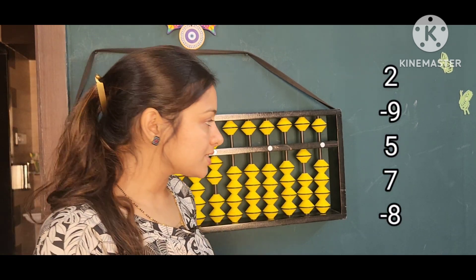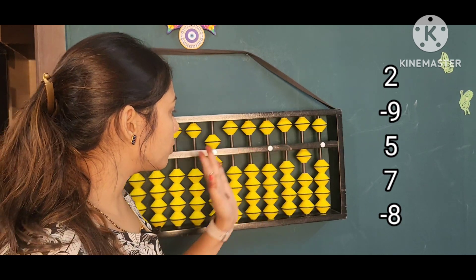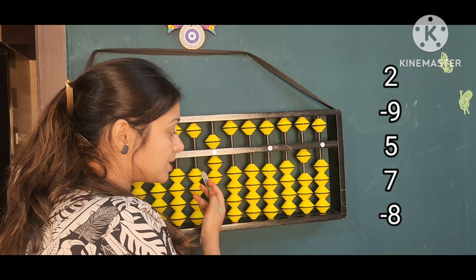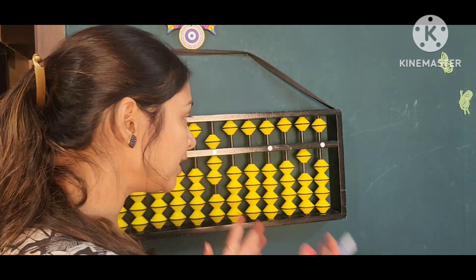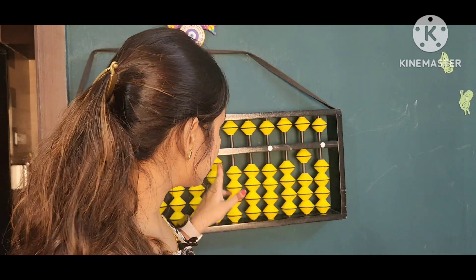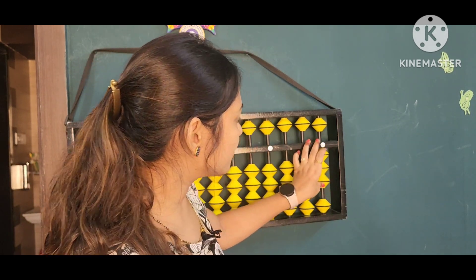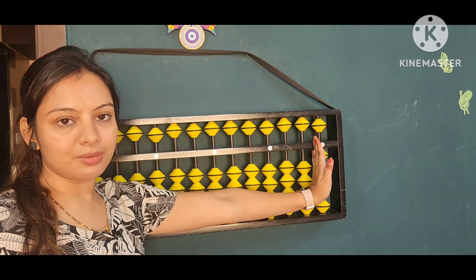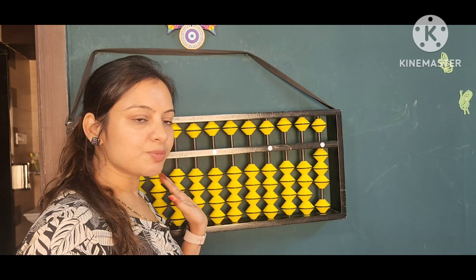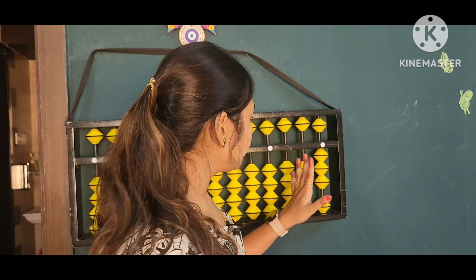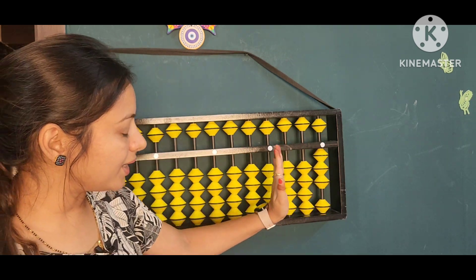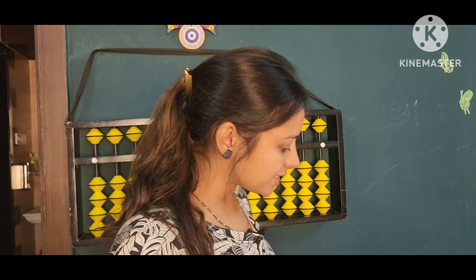Abhi seven is the answer but humne ten borrow kia tha. To humne wo wapas bhi dena hai but humare paas seven he hai. To hum log seven se wapas denge. Seven ten me se less seven karna hai, less ten add three. To yaha pe answer, it means it's minus. We got the answer three here, it means it's minus three.